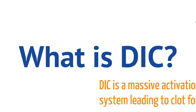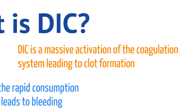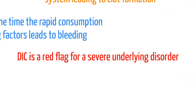Let's first start off talking about what DIC is. DIC is a massive activation of your coagulation system, leading to multiple clot formations throughout the body, from macro to microthrombin. At the same time, because your body is using up all these factors to create these clots, there are not enough clotting factors to prevent your body from bleeding.